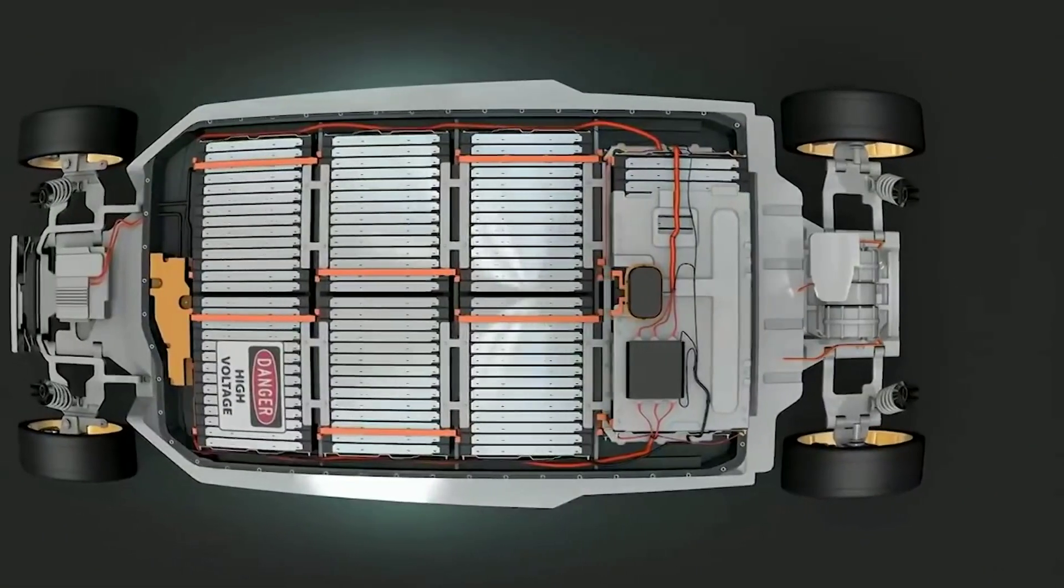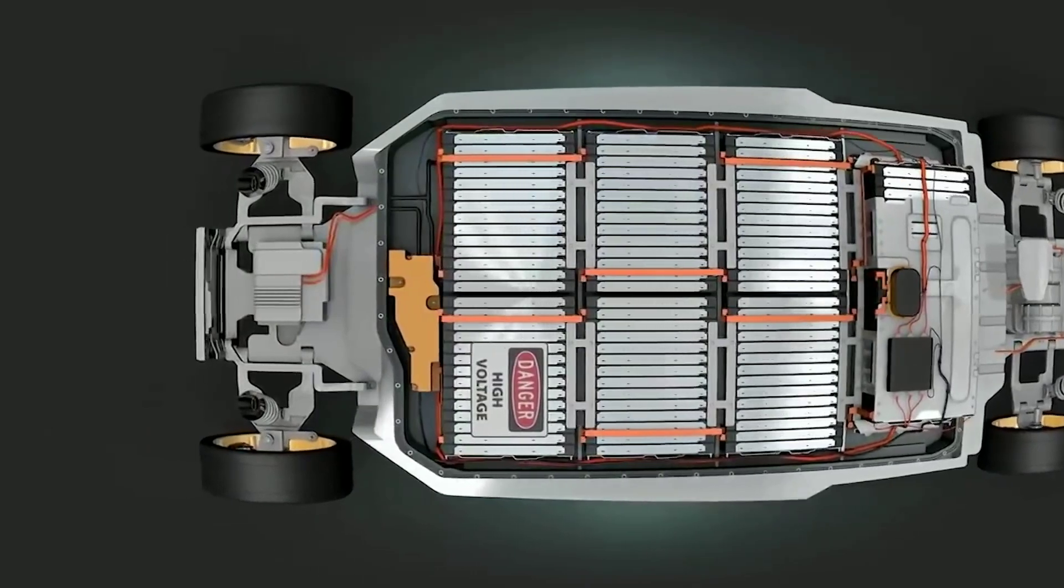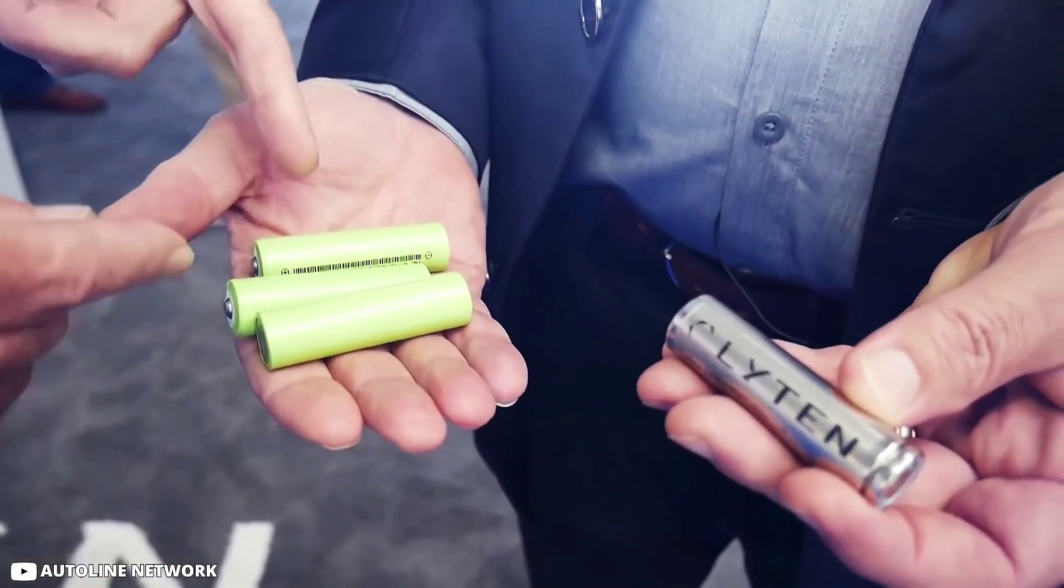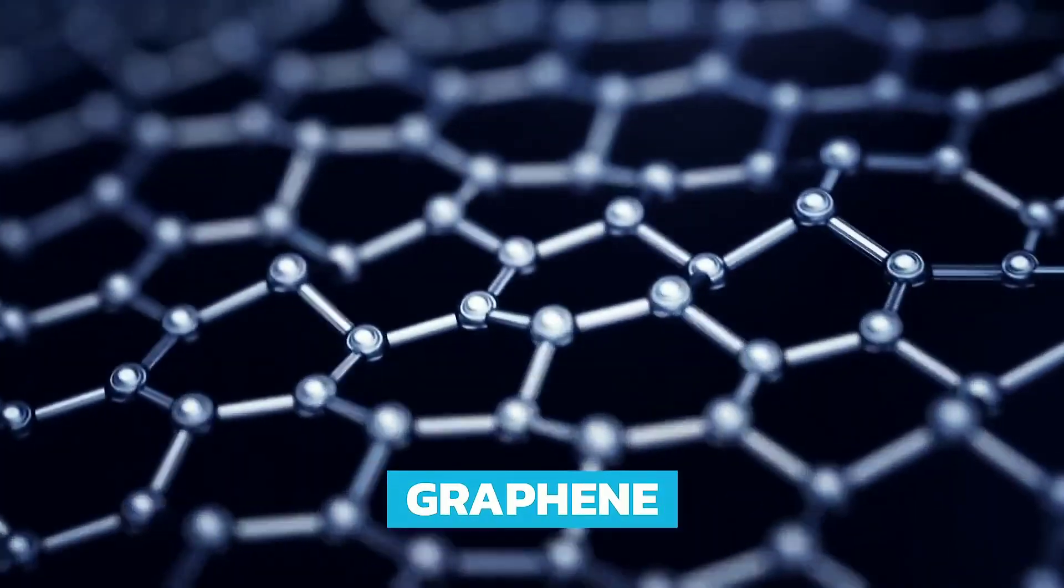So, how can we overcome these challenges? How can we make lithium-sulfur batteries stable, durable, and reliable? This is where Leighton's breakthrough innovation comes in. 3D graphene.